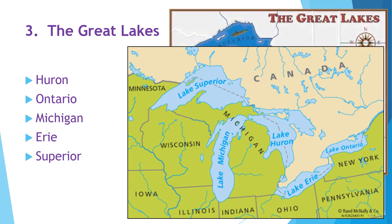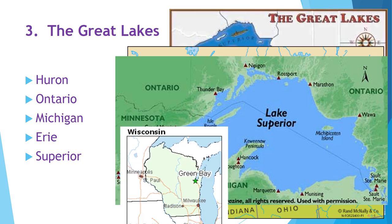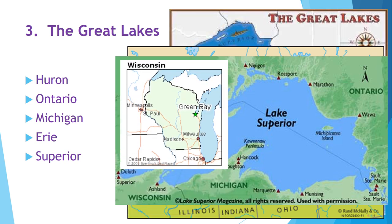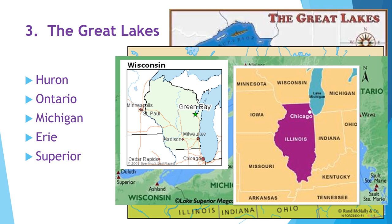The Great Lakes border the United States to the south and Canada to the north. The largest is Lake Superior, which is surrounded by the states of Minnesota, Wisconsin, and Michigan. Lake Superior is one of the largest freshwater lakes in the world. Along Lake Michigan, several large cities have been built, including Green Bay and Milwaukee in Wisconsin, as well as Chicago, Illinois. Write the word HOMES next to your list of these five lakes.